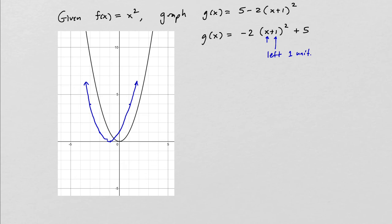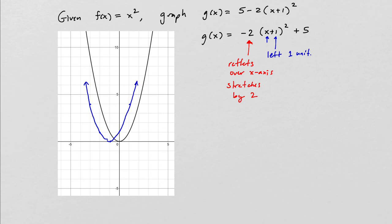The next thing that happens is that value, after you square it, gets multiplied by -2. The -2 does two things: it reflects over the x-axis because we are multiplying by a negative, and it also stretches the graph by a factor of 2. So all of these points are going to be reflected down and also stretched by a factor of 2. For example, this point will be reflected over the x-axis and then also gets doubled — so instead of being at -1, it's going to be at -2.